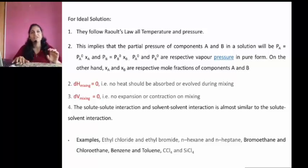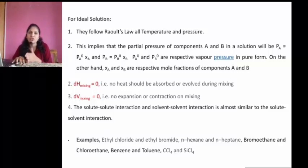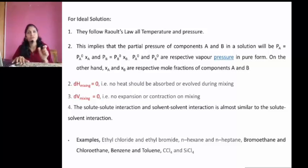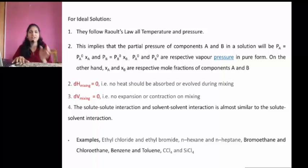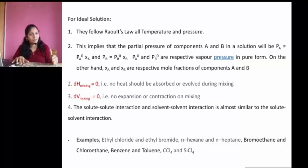Solute-solute interactions and solvent-solvent interactions are almost similar to the solute-solvent interactions. That is, interactions before and after formation of the solution should be similar in nature. Examples of ideal solutions include: ethyl chloride and ethyl bromide, N-hexane and N-heptane, bromoethane and chloroethane, benzene and toluene, carbon tetrachloride and silicon tetrachloride. Components of the same class can form ideal solutions.